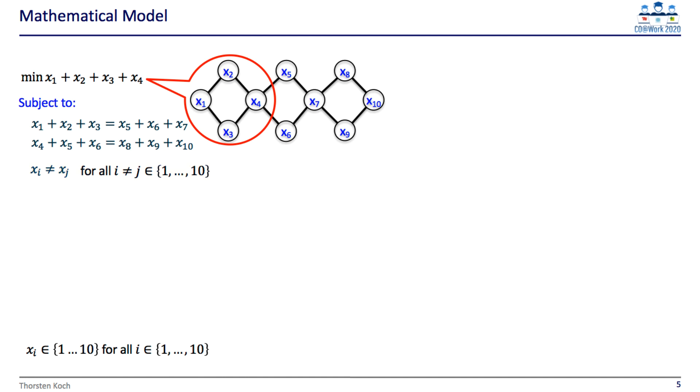This is now a model. The given constraints are sufficient to describe a feasible solution. There are further constraints we could add, like the sum of x1 to x10 plus x4 plus x7 has to be divisible by 3. But this is already implicitly there.